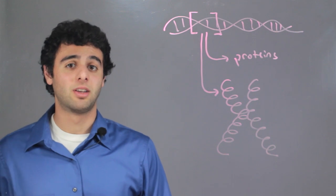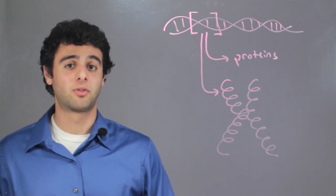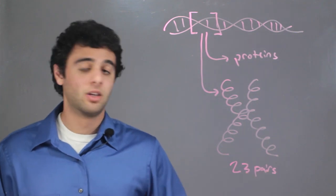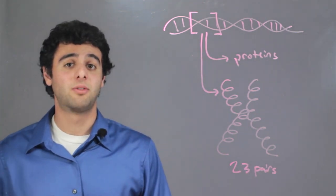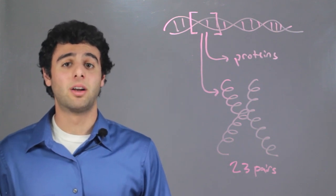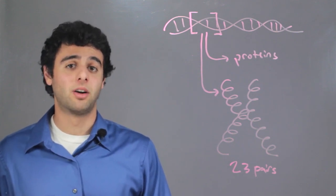Each human has 23 pairs of chromosomes. Each chromosome has specific genes that are packaged into it, and we get one pair from the mother and one pair from the father.